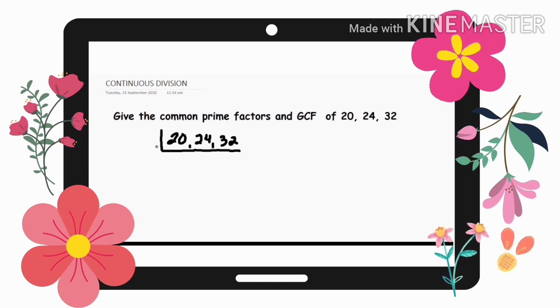So, example again, ang prime number is 3. Ano bang factors ng 3? 3 times 1. Okay. So, 20, 24, and 32. So, ang prime number na pwedeng divisible sila ay 2. Then, divide them. 20 divided by 2 is 10.